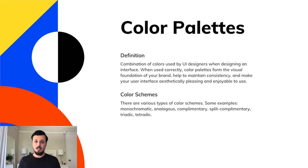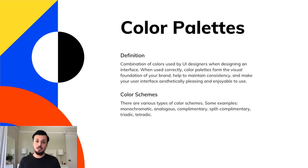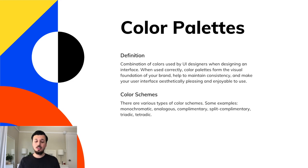Now let's talk about color palettes. A color palette is a combination of colors used by UI designers when designing an interface. When used correctly, color palettes form the visual foundation of your brand and help maintain consistency, making your interface aesthetically pleasing and enjoyable to use. The various types of color schemes we'll look at are monochromatic, analogous, complementary, split complementary, triadic, and tetradic.